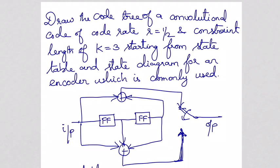The encoder diagram is not given in the question paper. The commonly used encoder diagram is the encoder where the first output is taken from the first input and the last output. The second adder output is taken from the combination of the first, second, and third. So this is the commonly used encoder diagram.